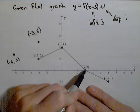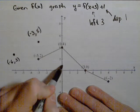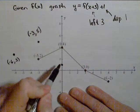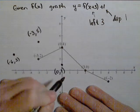This point that was at 3, 0 goes left 3 and up 1. So it is now the point 0, 1.